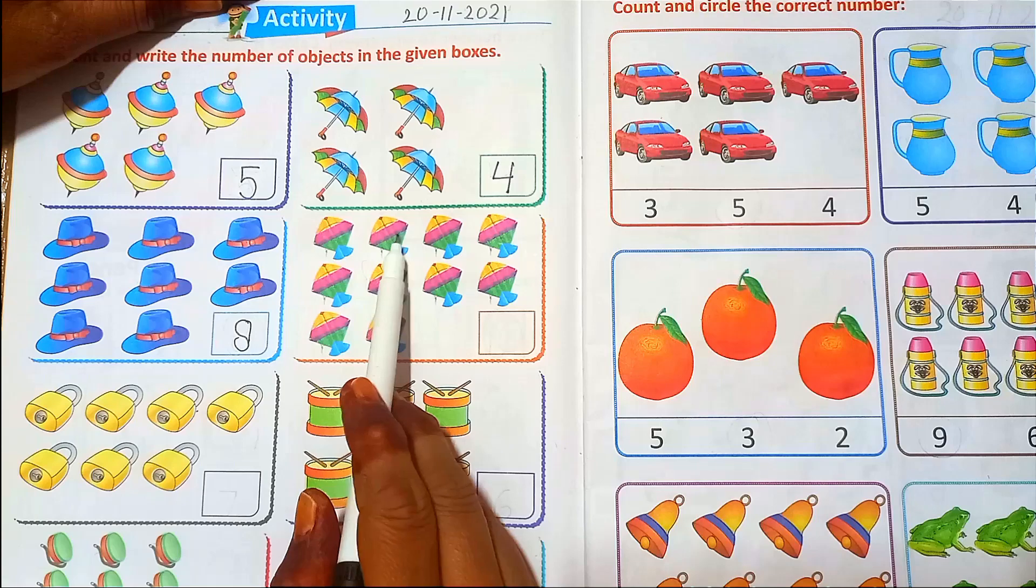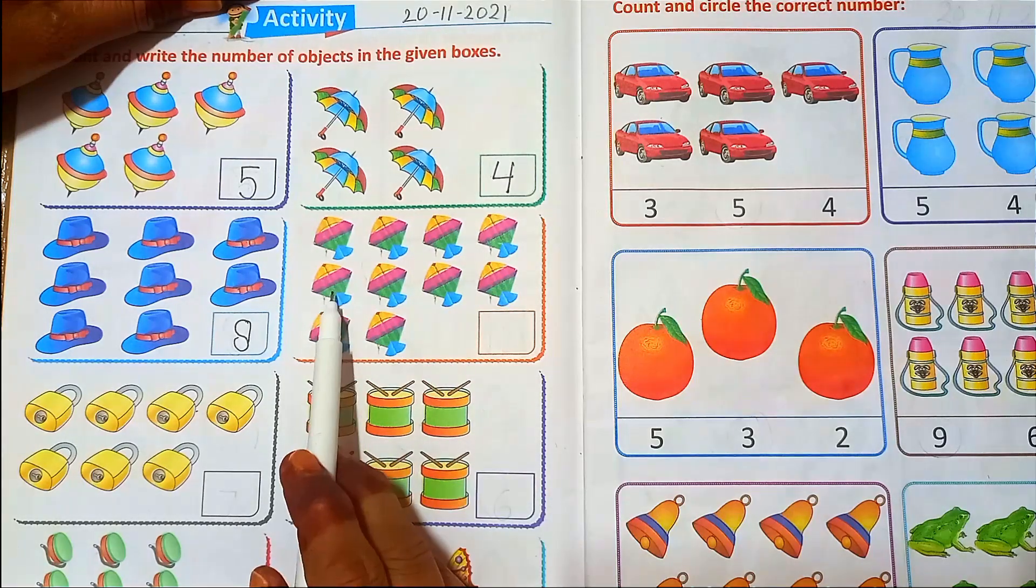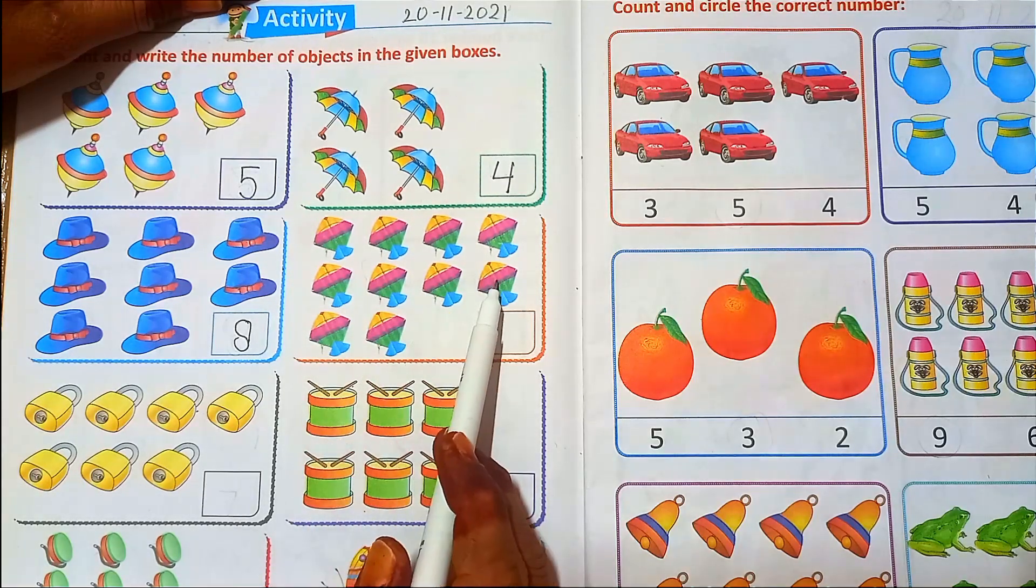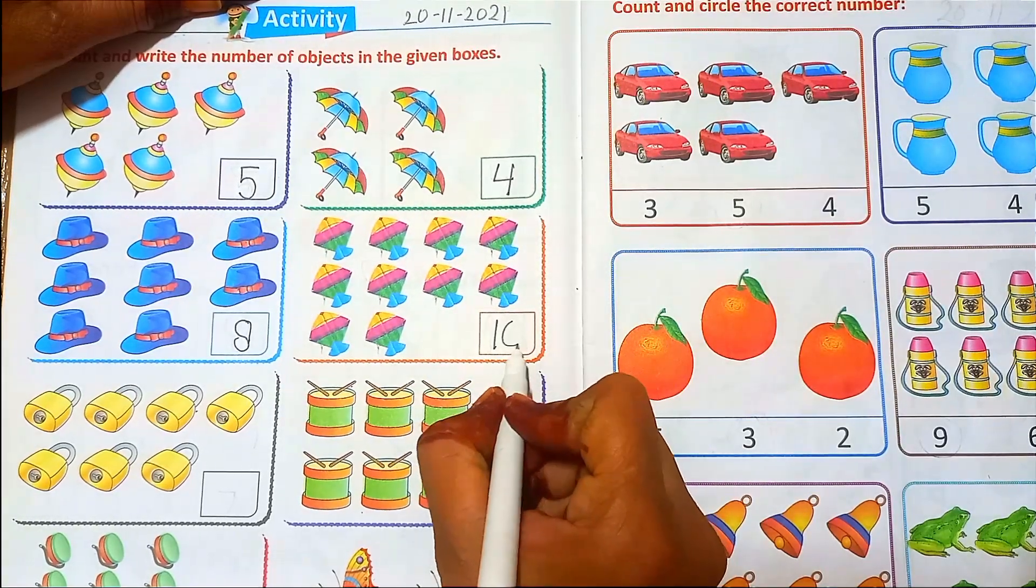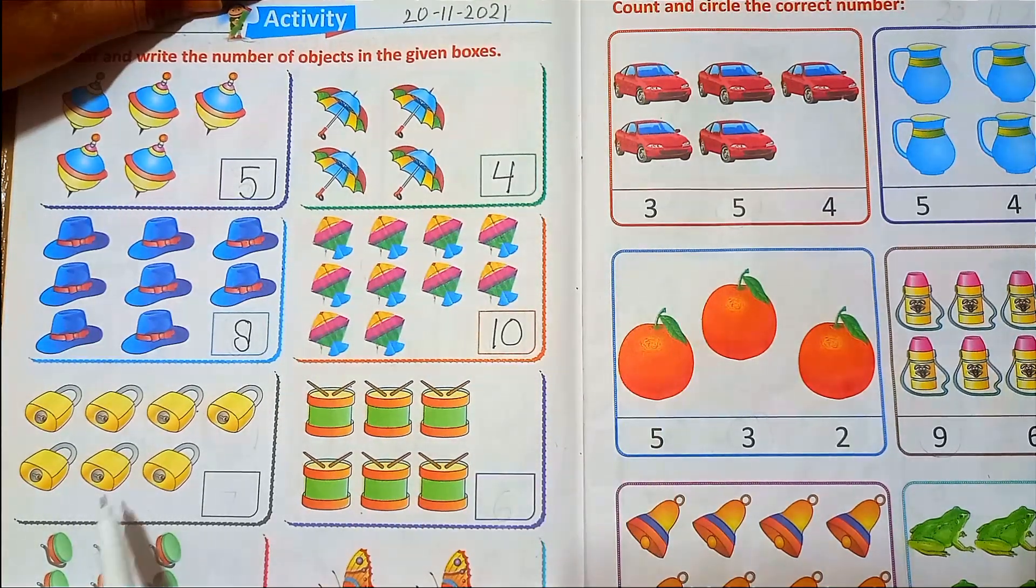Next. One, two, three, four, five, six, seven, eight, nine, ten. Ten kites.